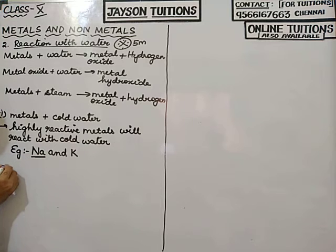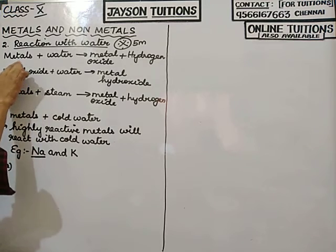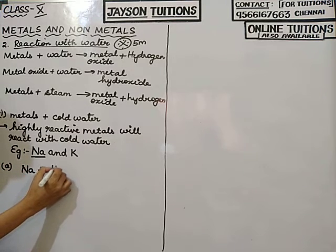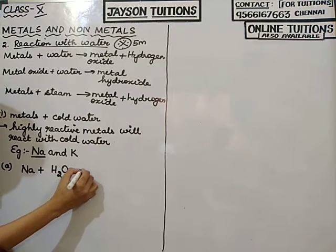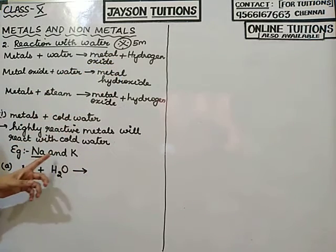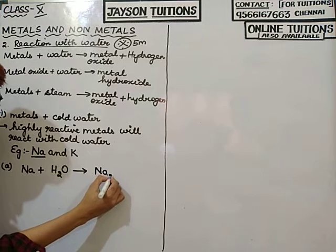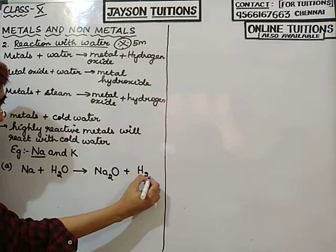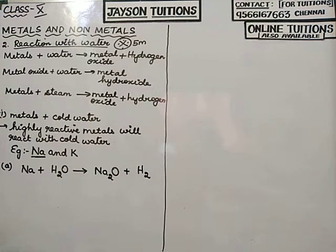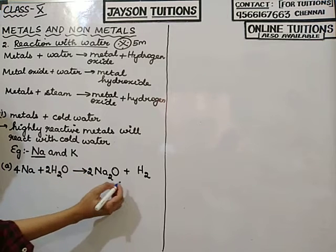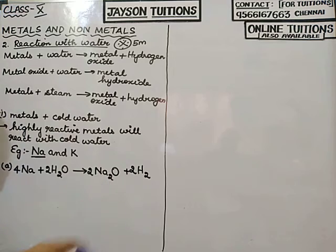First, for sodium: Na plus H2O. I should get metal oxide, which means sodium oxide Na2O, plus hydrogen gas H2. Now I am going to balance this equation: 4Na + 2H2O → 2Na2O + 2H2.